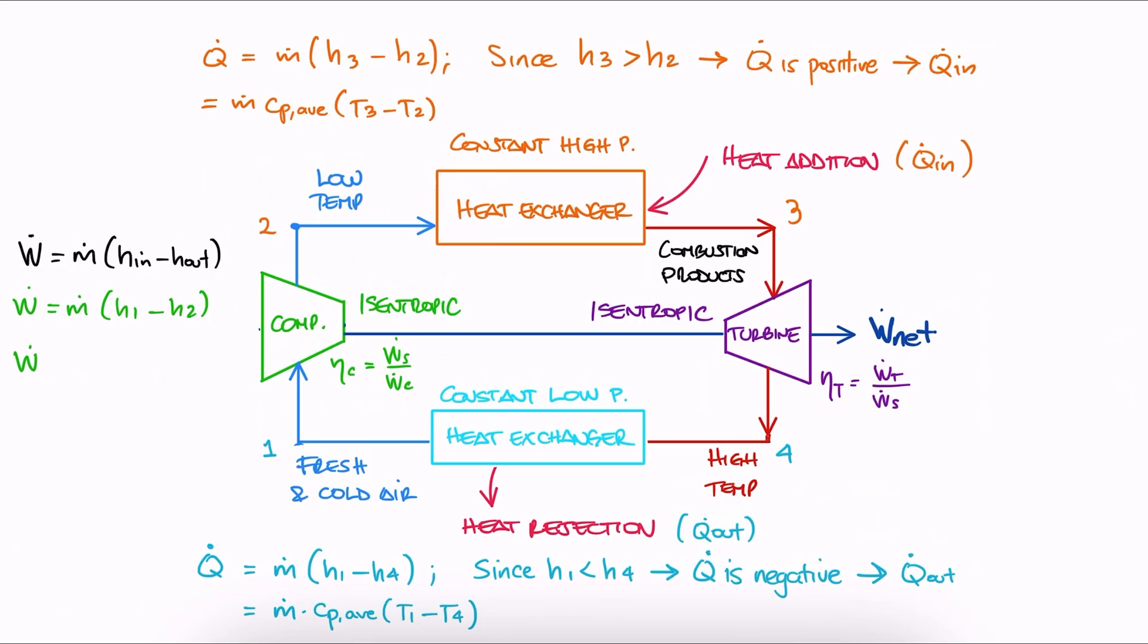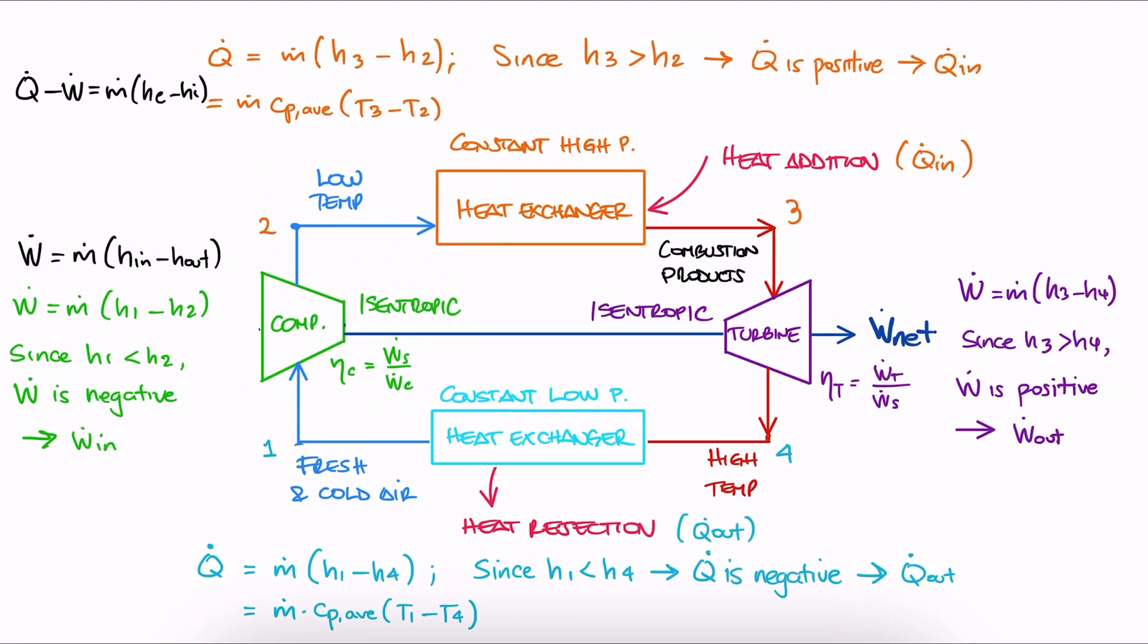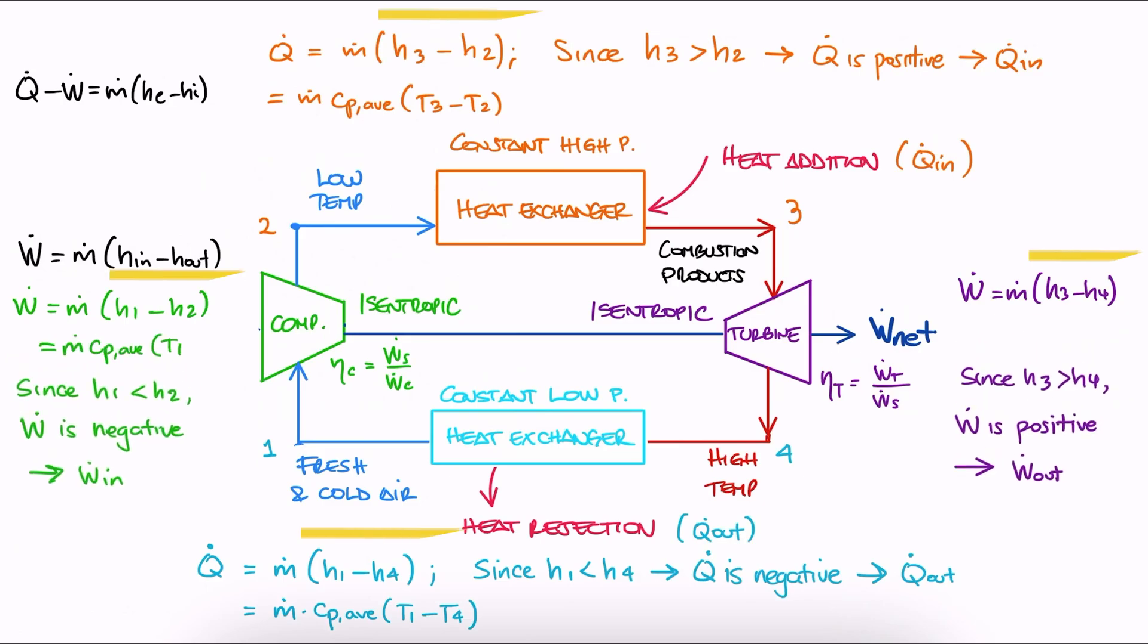The same analysis could be done for the work terms between 1 and 2, and 3 and 4. Remember that these come from energy conservation, neglecting kinetic and potential energy. These are the general equations that we would use to ultimately find the efficiency of the cycle.